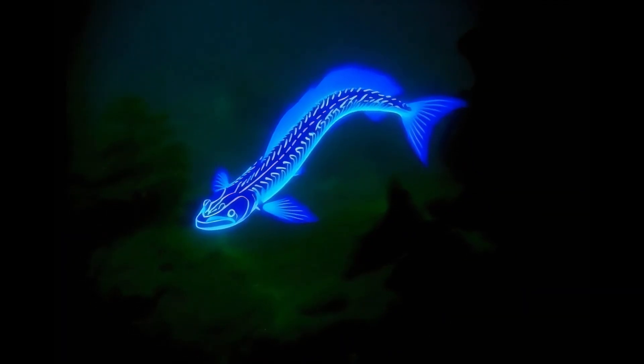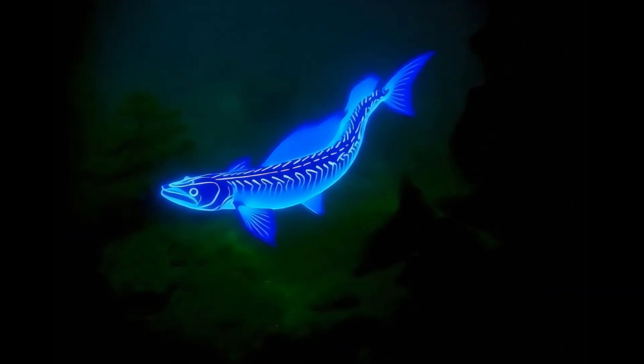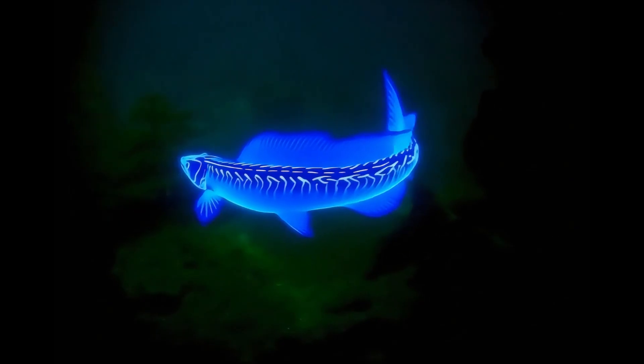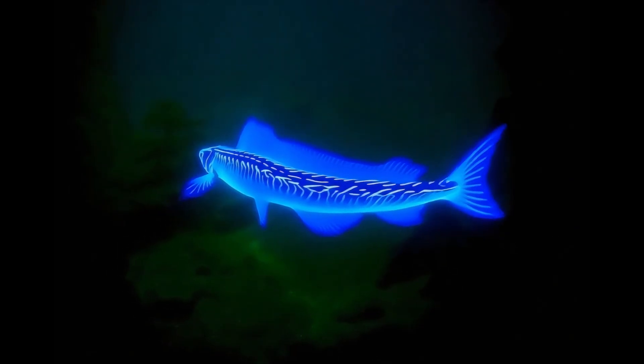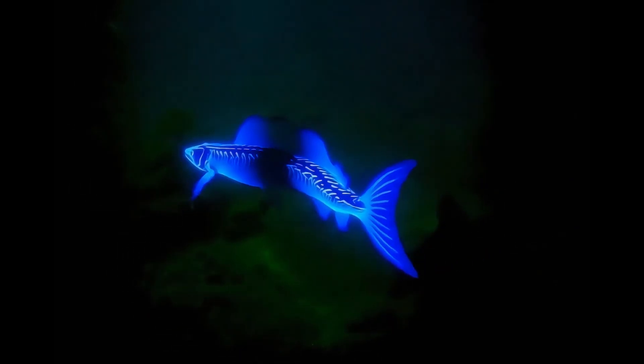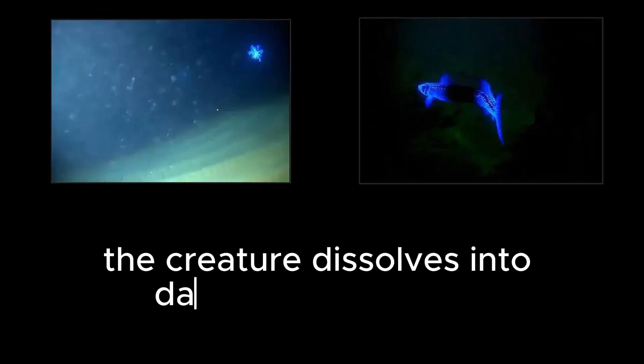Within seconds, the entire creature dimmed, its form dissolving into the surrounding darkness, as though its body was turning invisible, one layer at a time. When we see it in those final frames, the creature dissolves into darkness completely, proof that its glow is voluntary, not a constant biological trait.